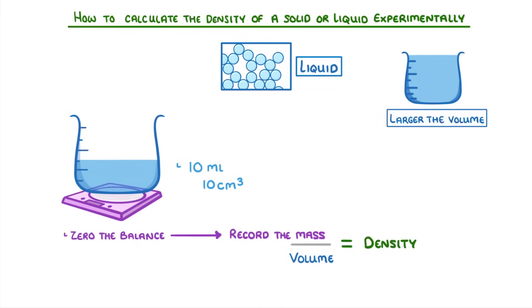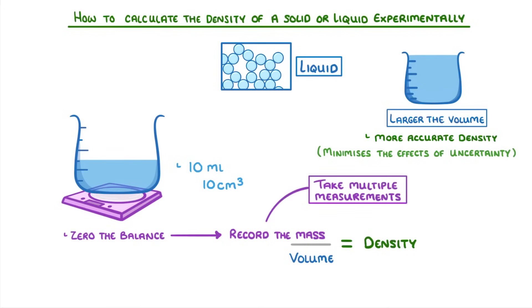In general, the larger the volume that you measure, the more accurate your density will be, because it minimizes the effects of the uncertainty in taking your measurements. You can also take multiple measurements, so that you can identify any anomalies, and also calculate a mean.